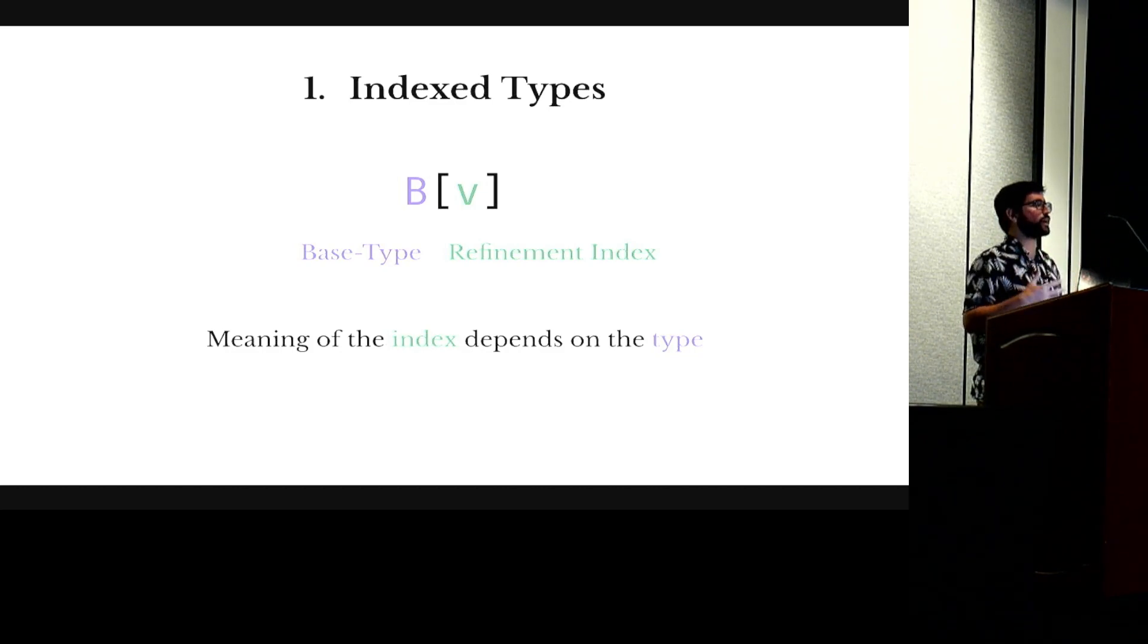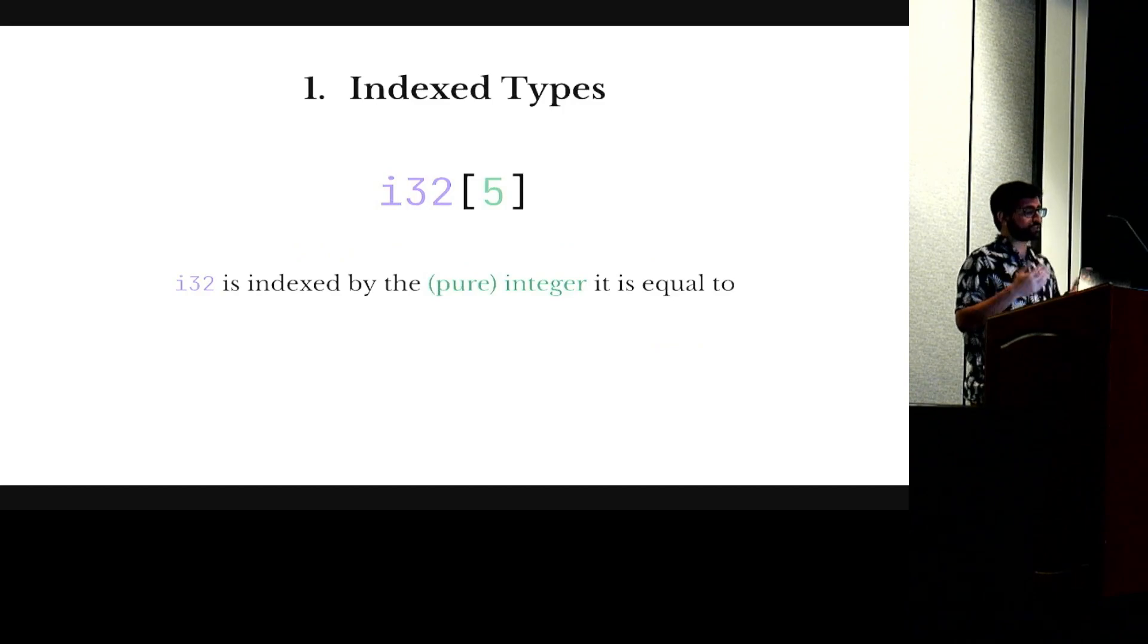And index types allow you to attach refinement value to a type that we call the index. And it lets you carry extra information about the type. The exact meaning of the index depends on the type. For example, we can index primitive integers by the pure integer they're equal to. And for example, type the expression 2 plus 3 as i32 indexed by 5.